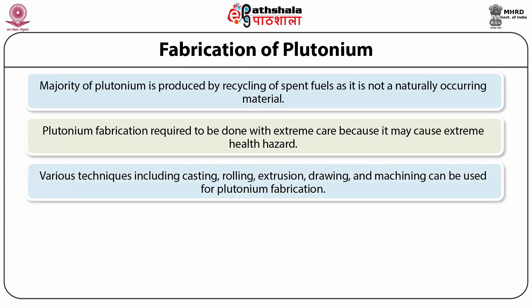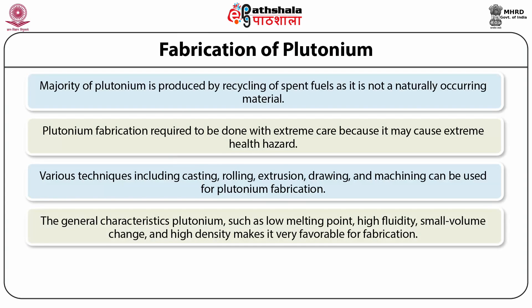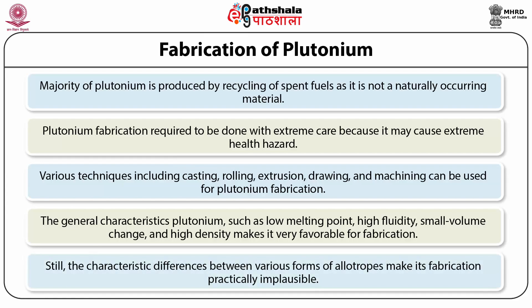Various techniques including casting, rolling, extrusion, drawing and machining can be used for plutonium fabrication. The general characteristics of plutonium — such as low melting point, high fluidity, small volume change and high density — make it favorable for fabrication. Still, the characteristic differences between various allotropes make its fabrication practically challenging.